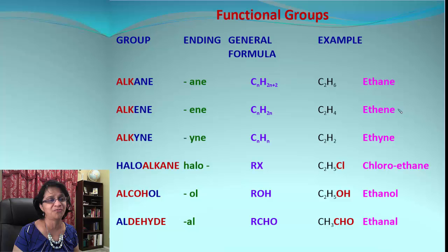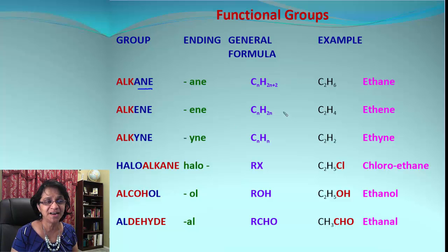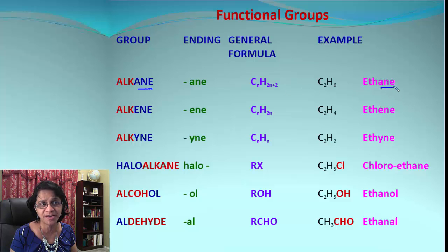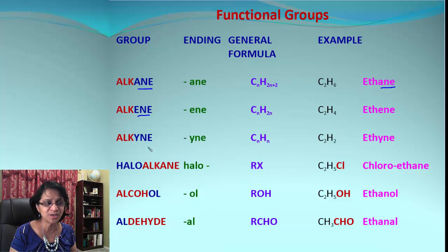Here is the list of functional groups — don't be alarmed, the list is quite big but it's very easy to identify which functional group we have in a molecule. Alkanes have all single bonds with general formula CₙH₂ₙ₊₂ and always end in '-ane.' Alkenes end in '-ene,' have a double bond, and have the formula CₙH₂ₙ — for example, C₂H₄ is ethene.